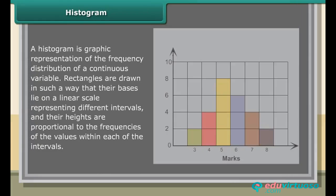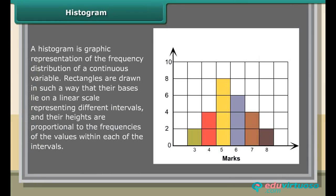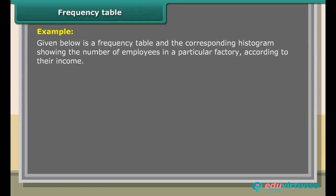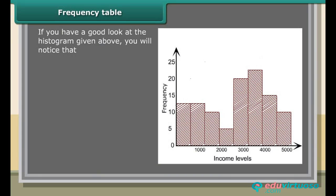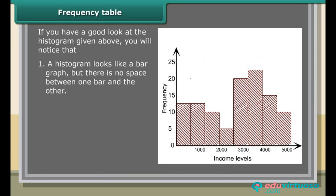Histogram: A histogram is a graphic representation of the frequency distribution of a continuous variable. Rectangles are drawn such that their bases lie on a linear scale representing different intervals and their heights are proportional to the frequency of the values within each interval. For example, given below is a frequency table and the corresponding histogram showing the number of employees in a factory according to their income level. A histogram looks like a bar graph but there is no space between one bar and the other.